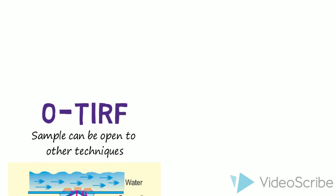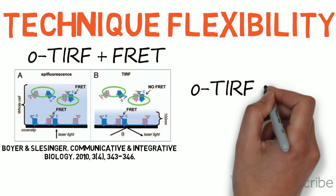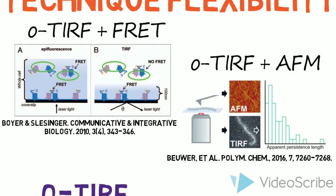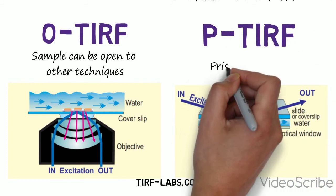O-TIRF can be combined with other nanoscale imaging techniques. It has been shown to be used with fluorescence resonance energy transfer and atomic force microscopy. P-TIRF does not work well with these other techniques because the geometry is bulky.